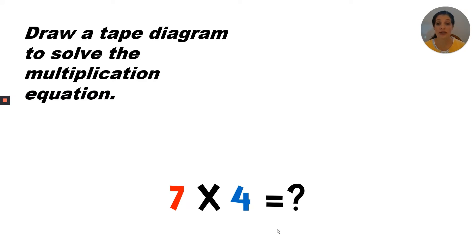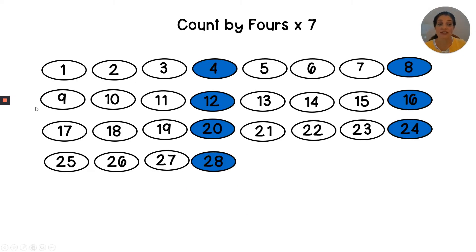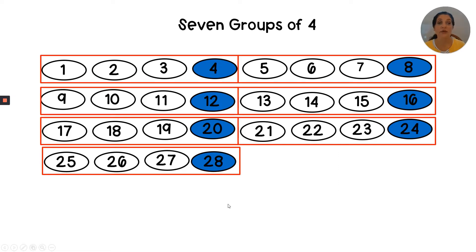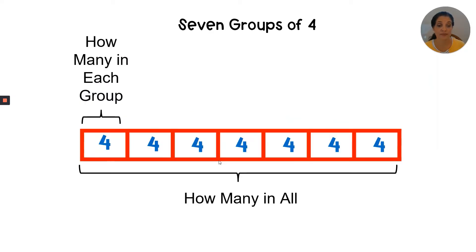Let's draw a tape diagram to solve the multiplication equation 7 times 4 equals question mark. Let's count by four seven times: 4, 8, 12, 16, 20, 24, 28. Now we're going to put boxes around groups of four: one, two, three, four, five, six, seven boxes — seven groups of four. We want to know how many in all.